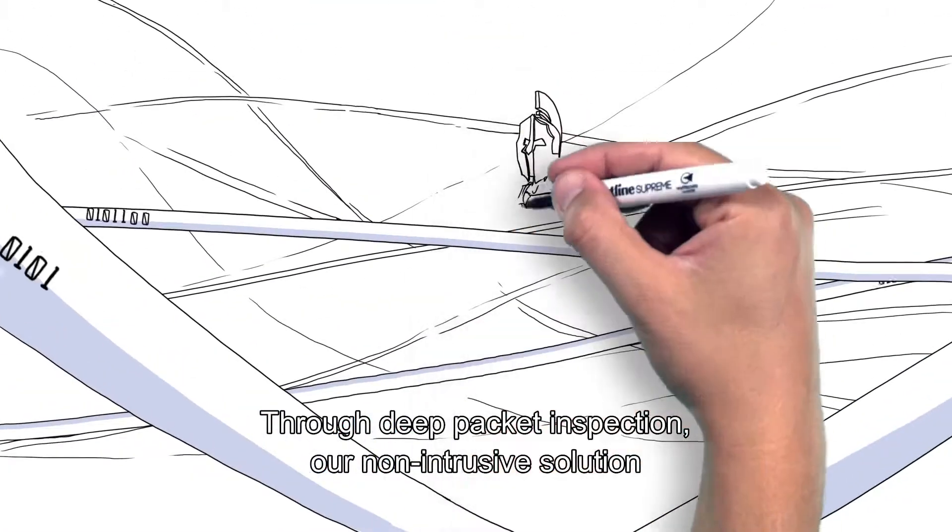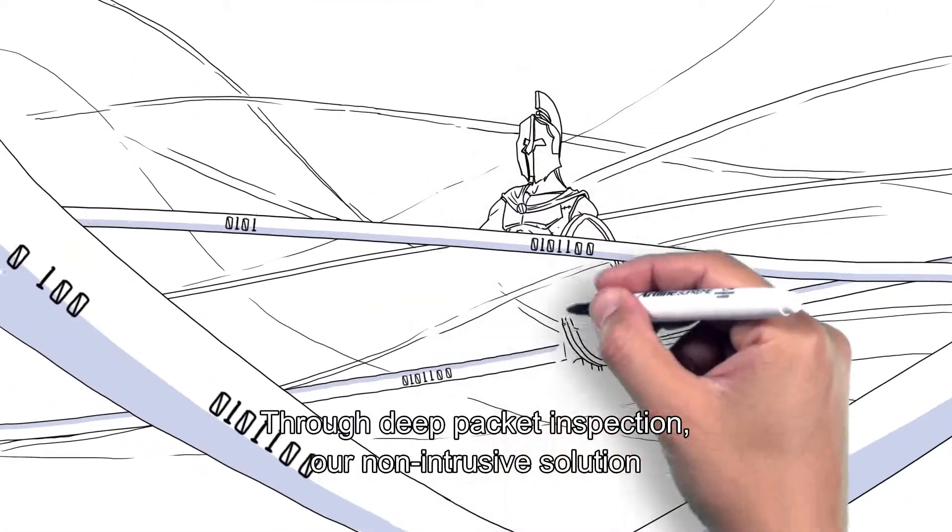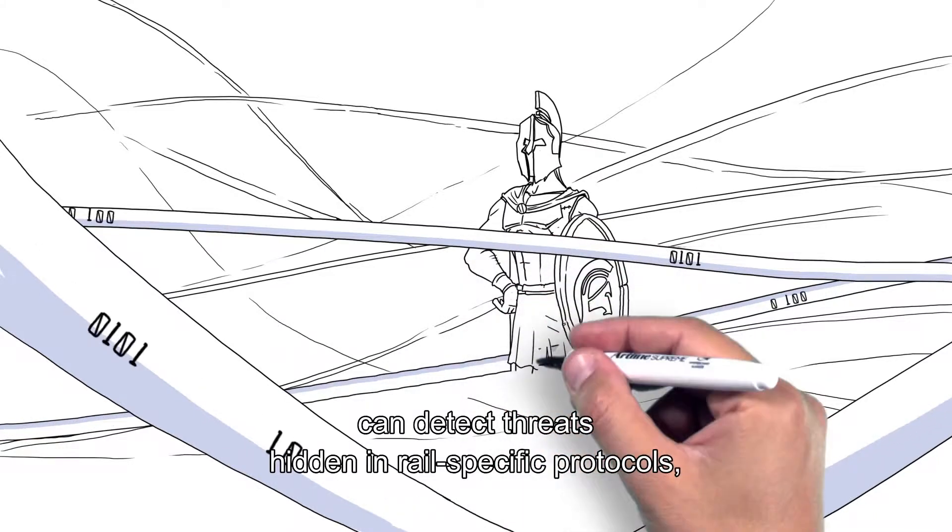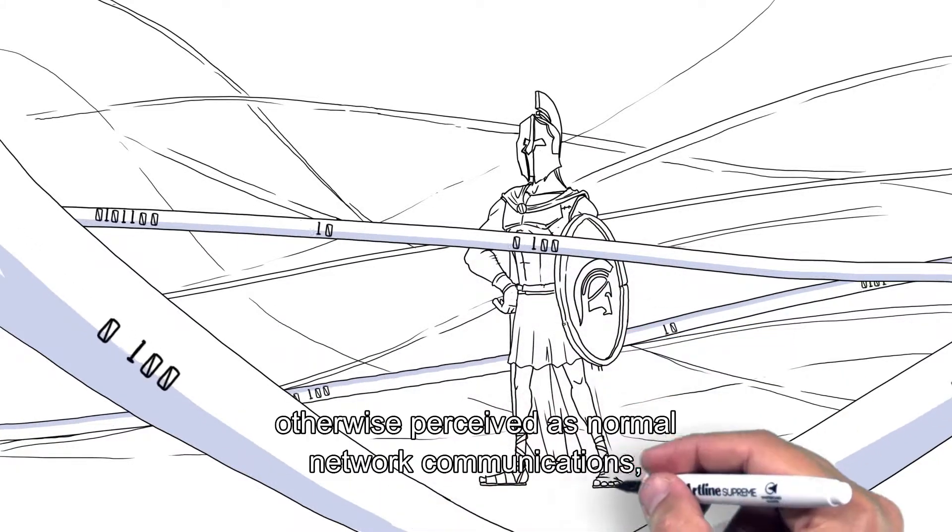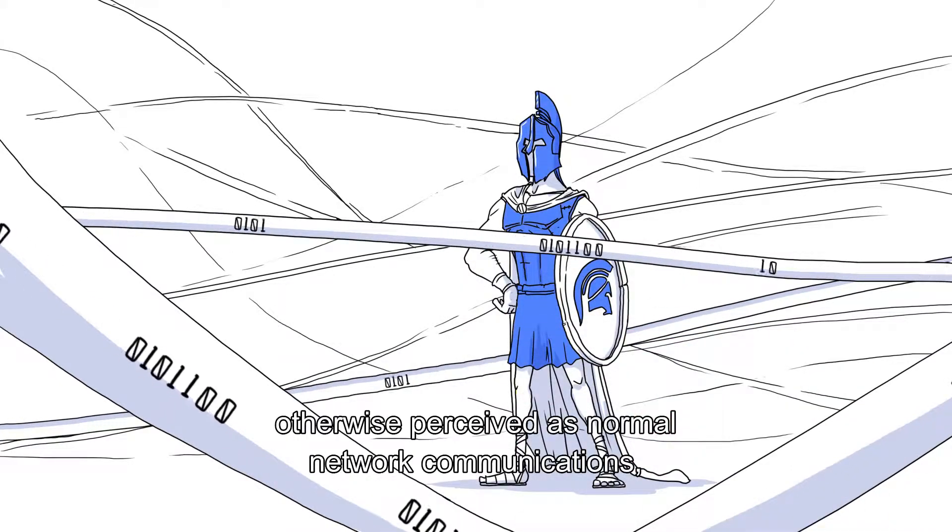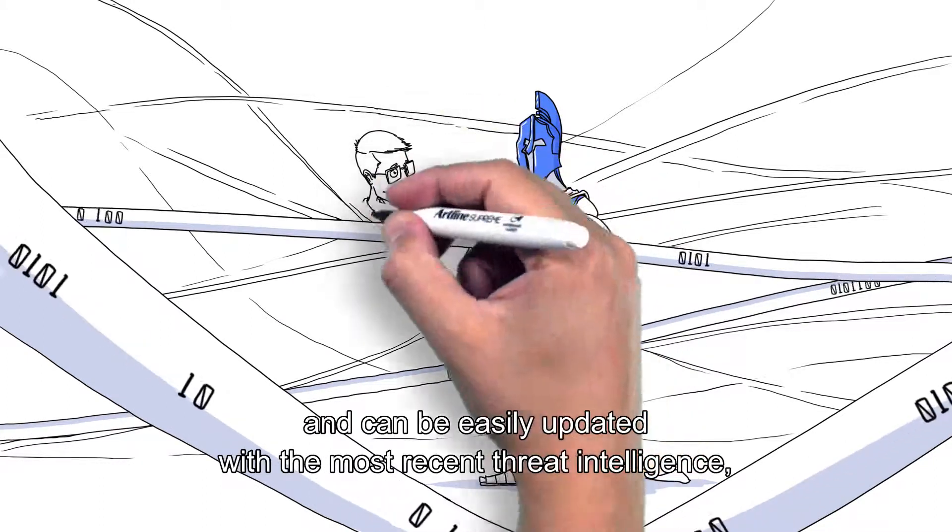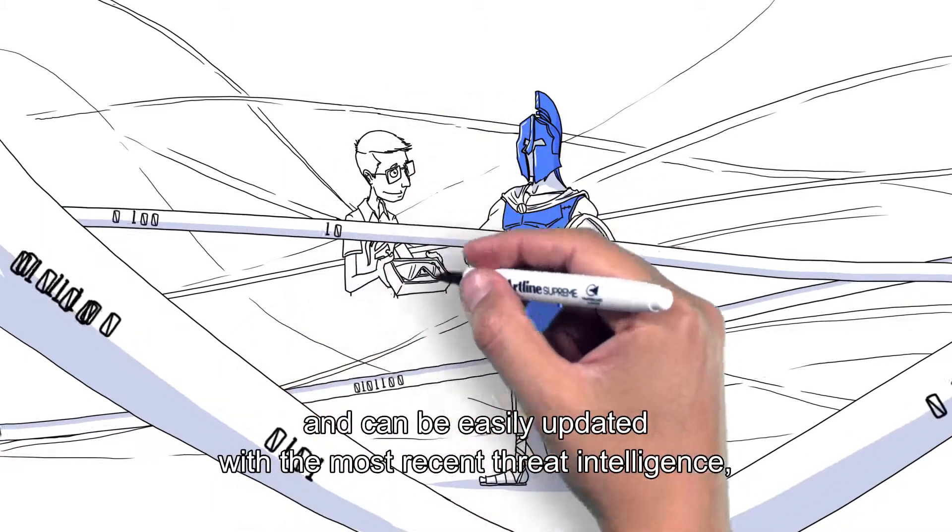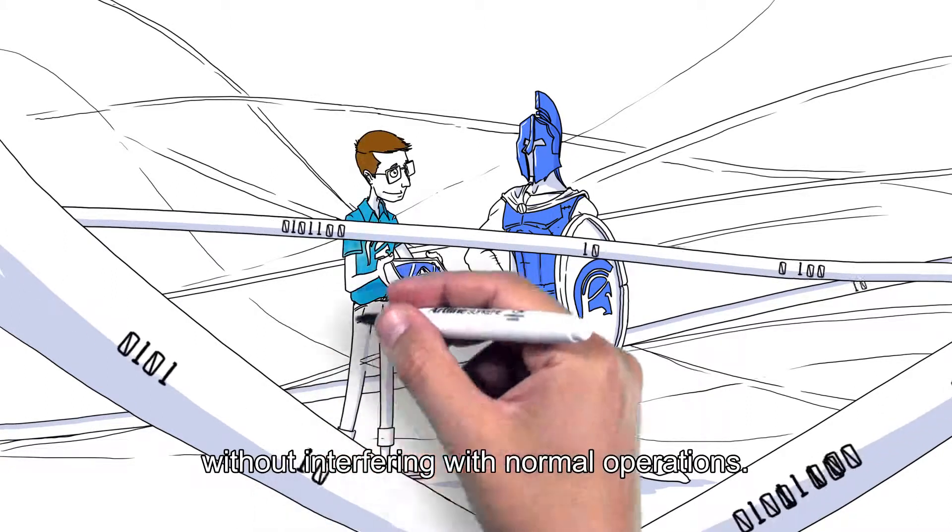Through deep packet inspection, our non-intrusive solution can detect threats hidden in rail-specific protocols, otherwise perceived as normal network communications, and can be easily updated with the most recent threat intelligence without interfering with normal operations.